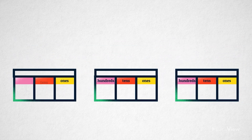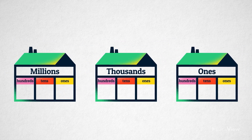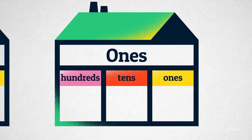So it can be easier to think of the columns in place value houses. Each house has three rooms. The ones house has a room labeled ones, another labeled tens, and a third room labeled hundreds.